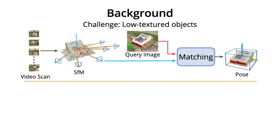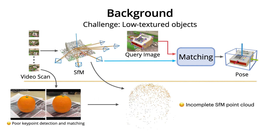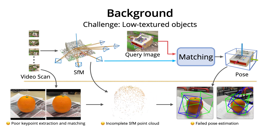However, OnePose is a keypoint-based pipeline which struggles with low-textured objects. It requires performing 2D keypoint detection and matching between image pairs for structure from motion. For low-textured objects, it is hard to detect enough salient keypoints for matching. Therefore, poor keypoint detection and matching between image pairs lead to an incomplete reconstructed object point cloud, and pose estimation based on 2D-3D matching is thus prone to fail.